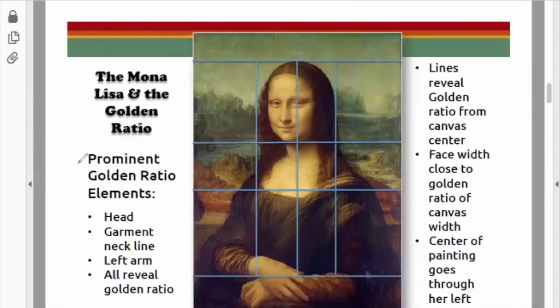The Mona Lisa and the golden ratio. The prominent areas where the golden ratio is found include her head, her garment neckline, and her left arm.